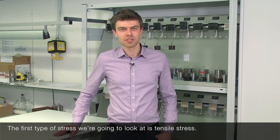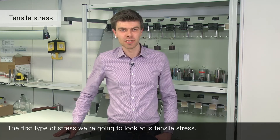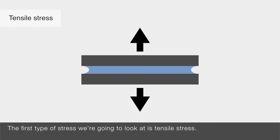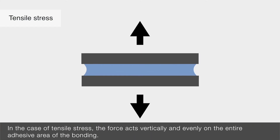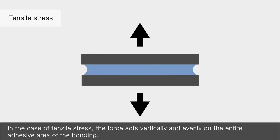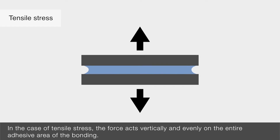Welcome to our fourth video: types of stress acting on adhesive bonds. The first type of stress we're going to look at is tensile stress. In the case of tensile stress, the force acts vertically and evenly on the entire adhesive area of the bonding.